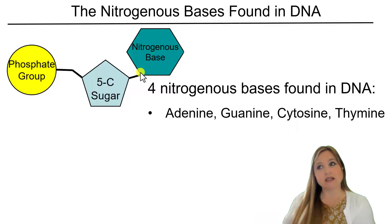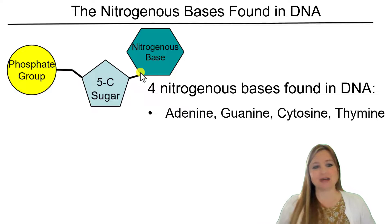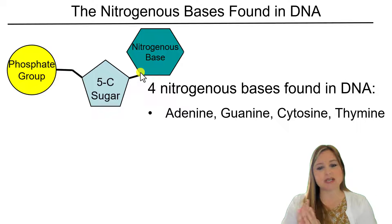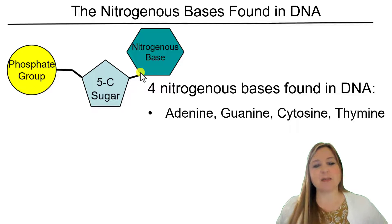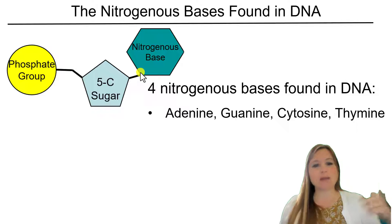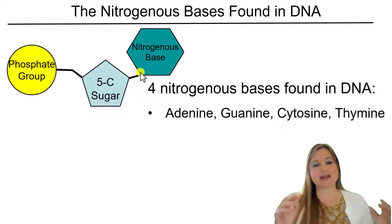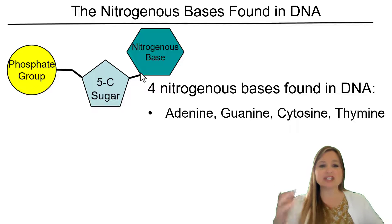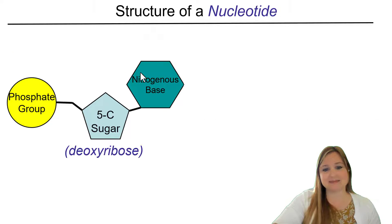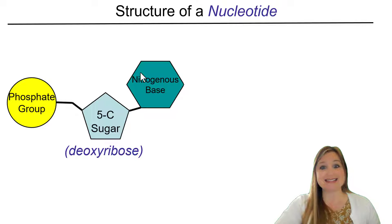When you hear something like guanine, well, guanine isn't the entire nucleotide — guanine is the base that's found in the nucleotide. So when we're talking about adenine, guanine, cytosine, and thymine — A, G, C, and T as we abbreviate them — we're really talking about the bases that are found. There's only one base per nucleotide, but there are four different types of nucleotides because we can have nucleotides with adenine, guanine, cytosine, or thymine as the base.